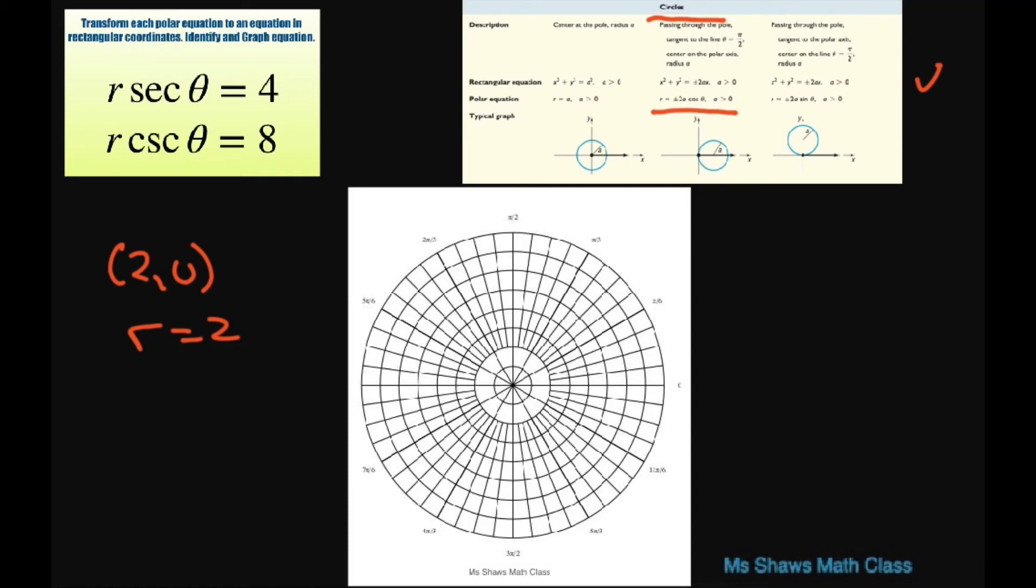So basically when you graph it, you go to 2 comma 0, which is right there on the polar graph. The radius is 2. So from here you go out to each place, and the rest is kind of hard, so you just sketch the graph here. So it's something like that.